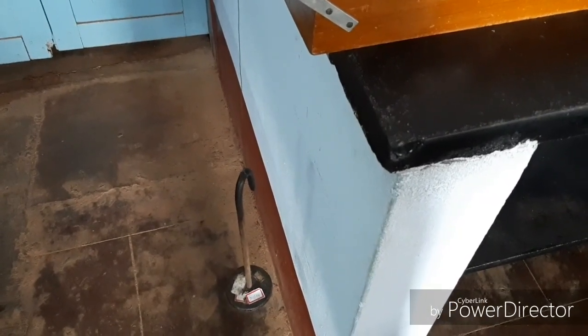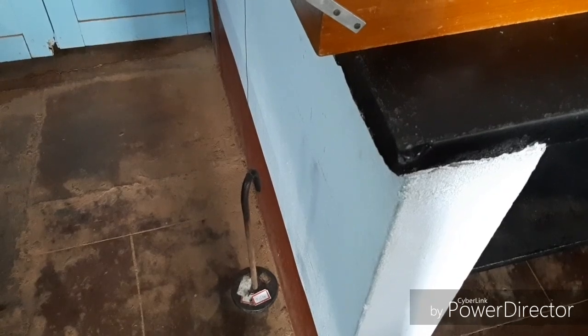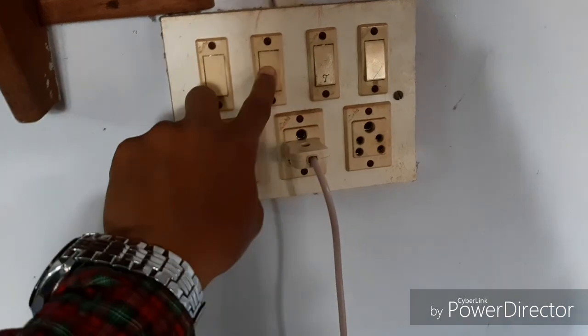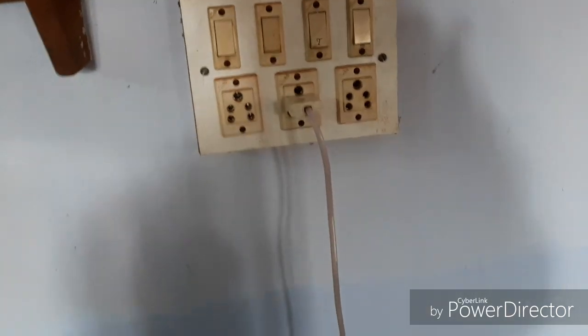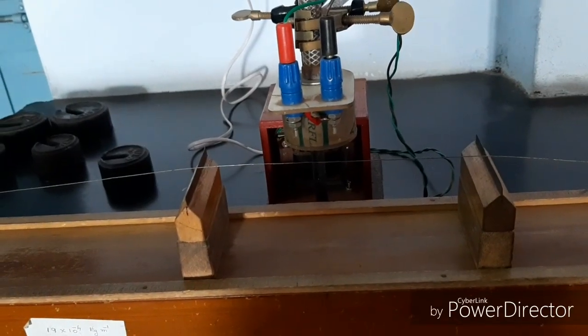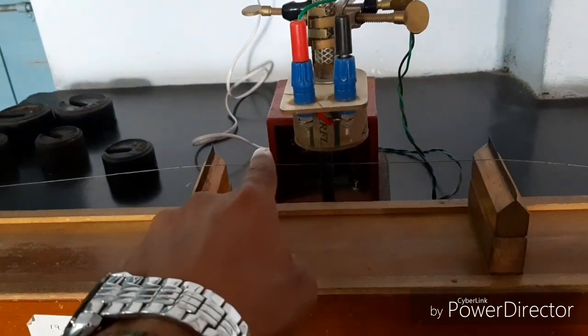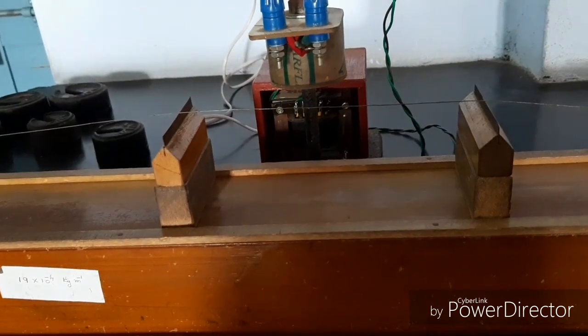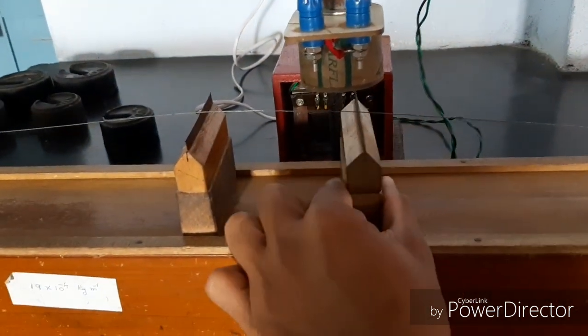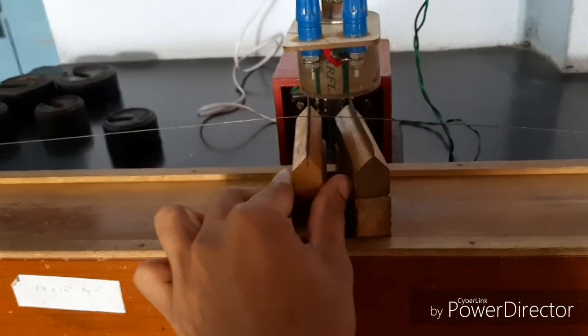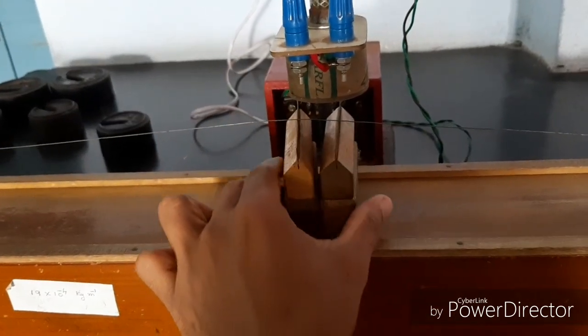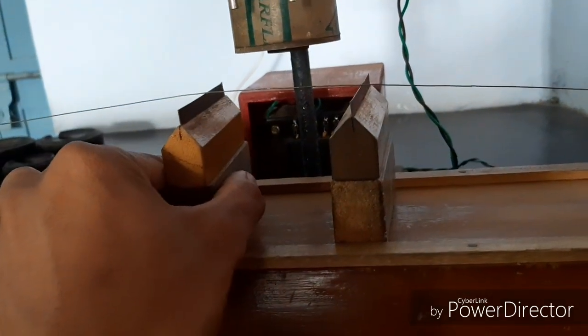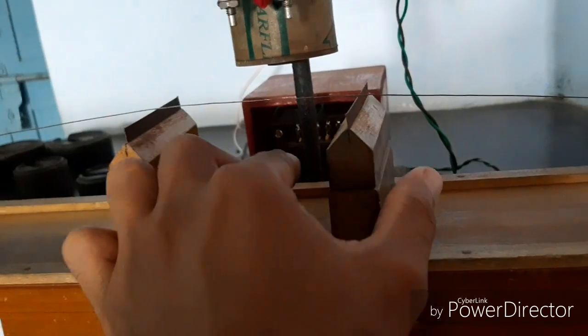Here I am not adding any load because weight hanger itself has 0.5 kg. Now switch on the power supply. If coil is active, by touching the sonometer wire you can feel vibration. Now begin from zero length.